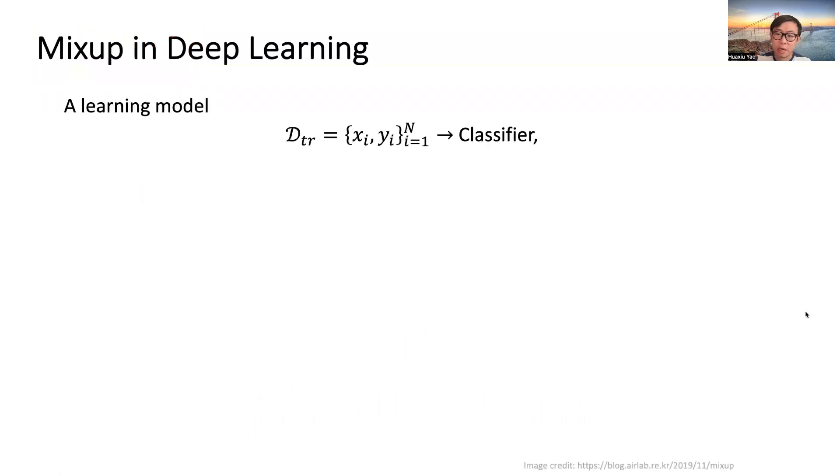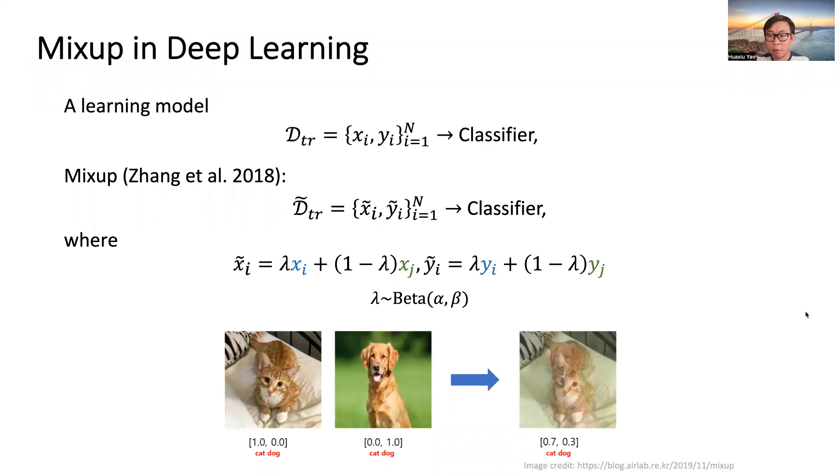In deep learning, our models are classified from a training set. Mixup, an interpolation-based data augmentation method, replaces the original training set with a mixed set. Here we pick two examples, XI YI and XJ YJ, and interpolate them to generate a mixed example. Mixup provides a reasonable and effective way in classification.